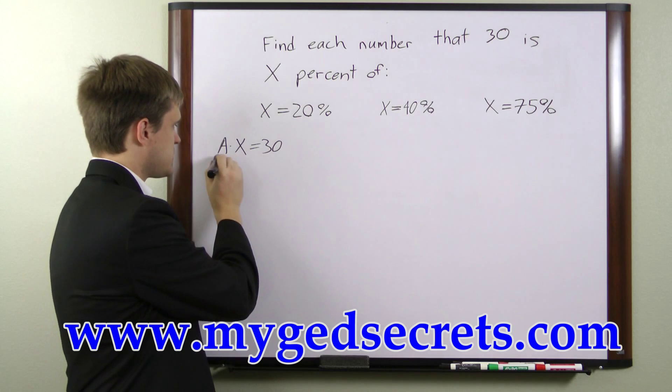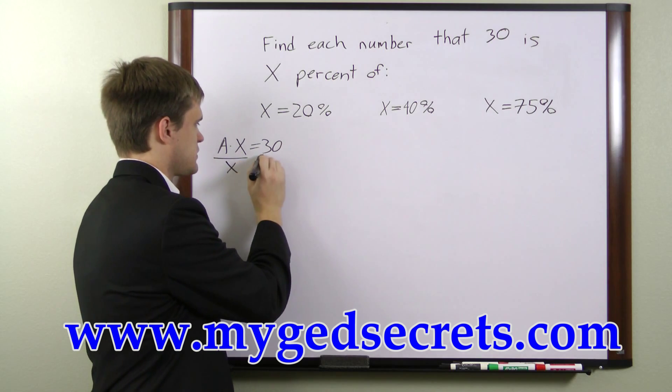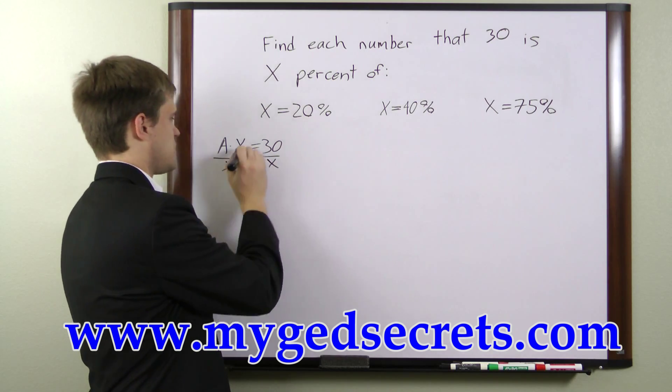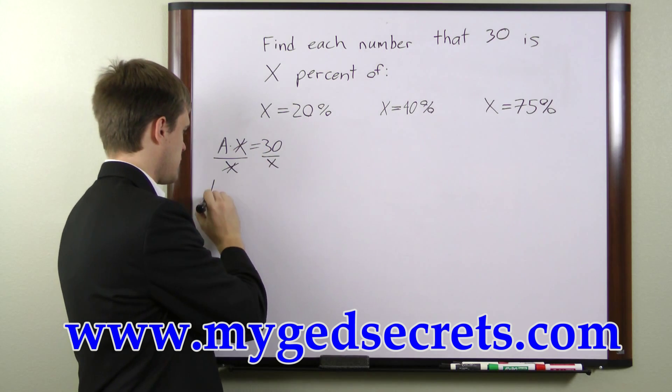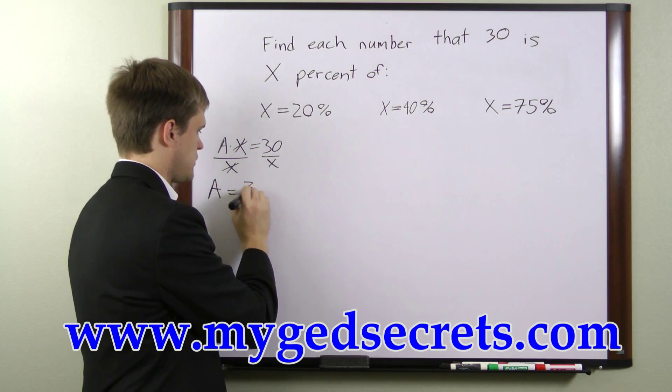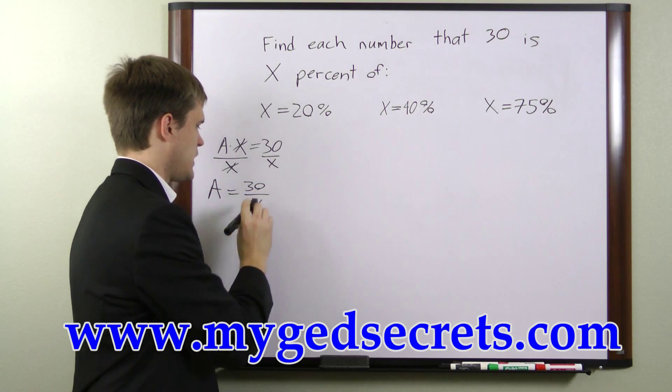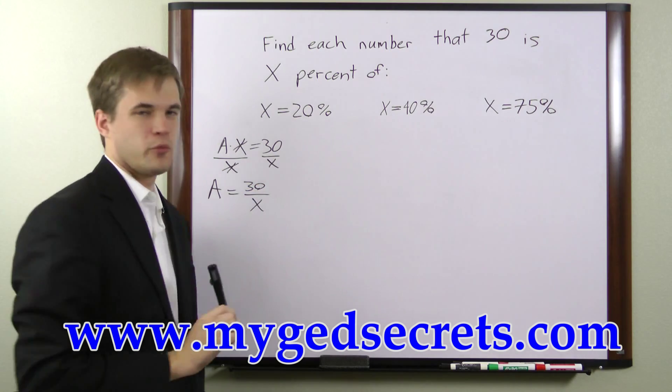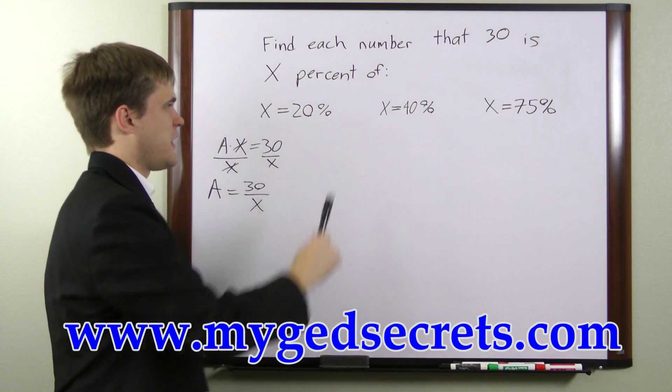We can simplify this by dividing both sides by x percent. The x's cancel and that leaves us with a equals 30 over x percent. That's the formula we'll be using to find a for each of these values of x.